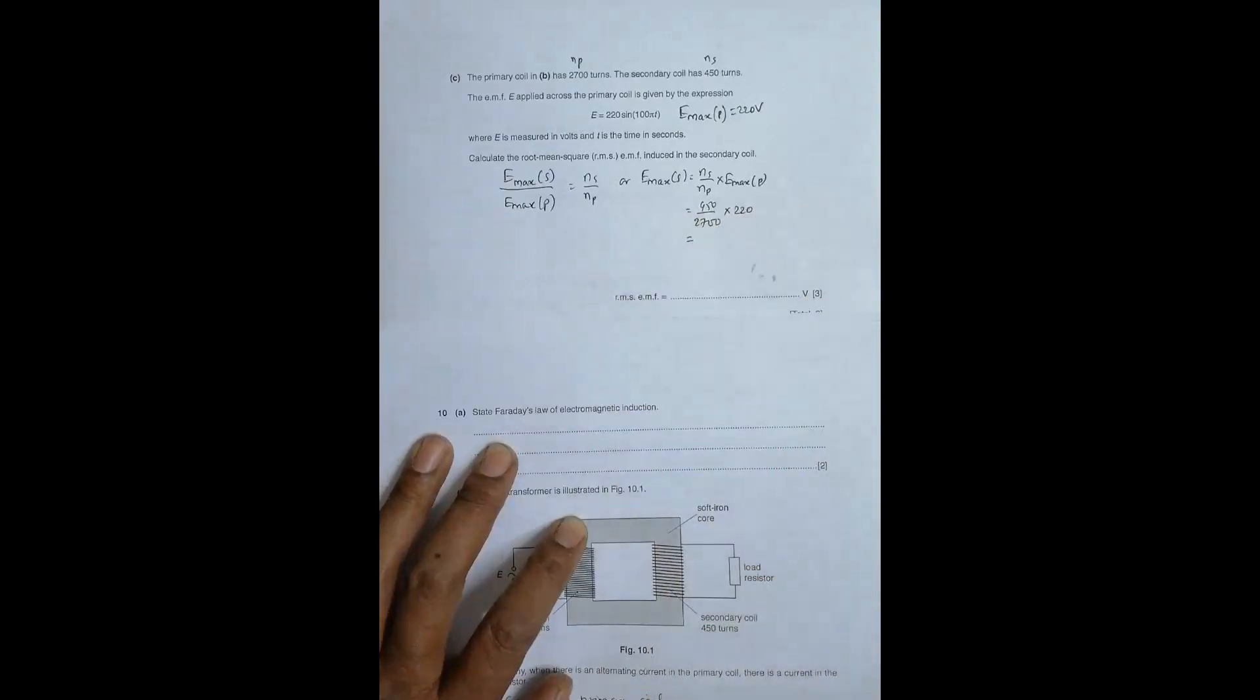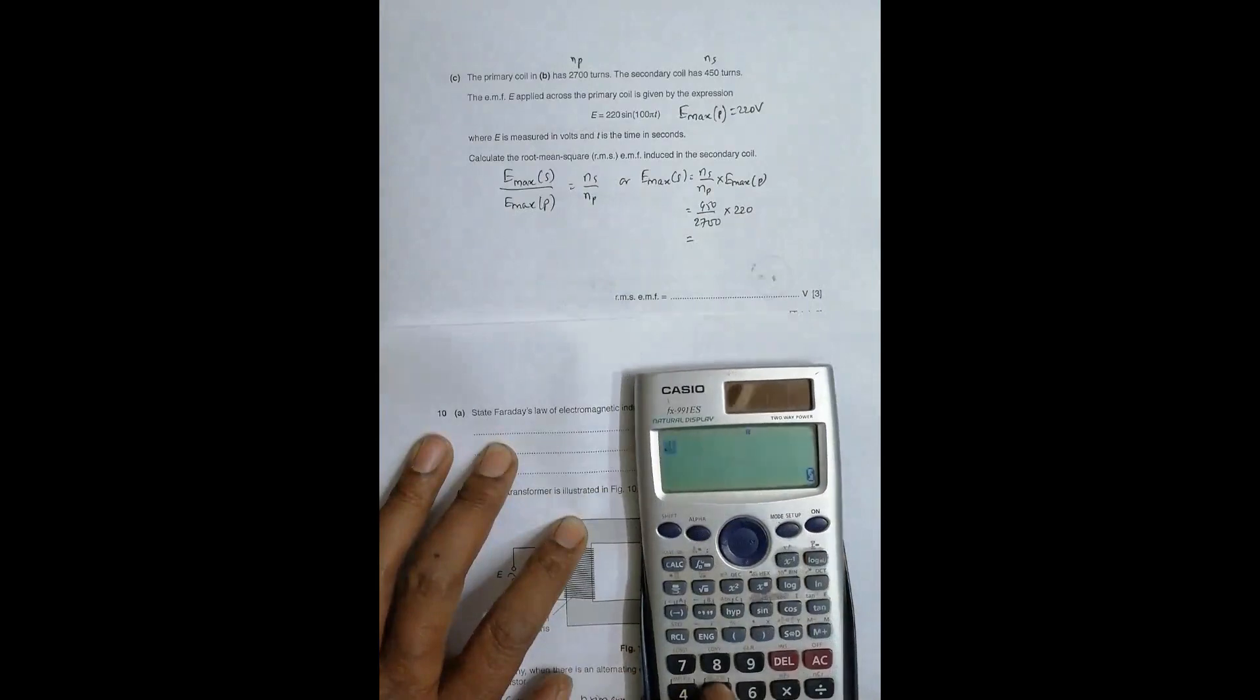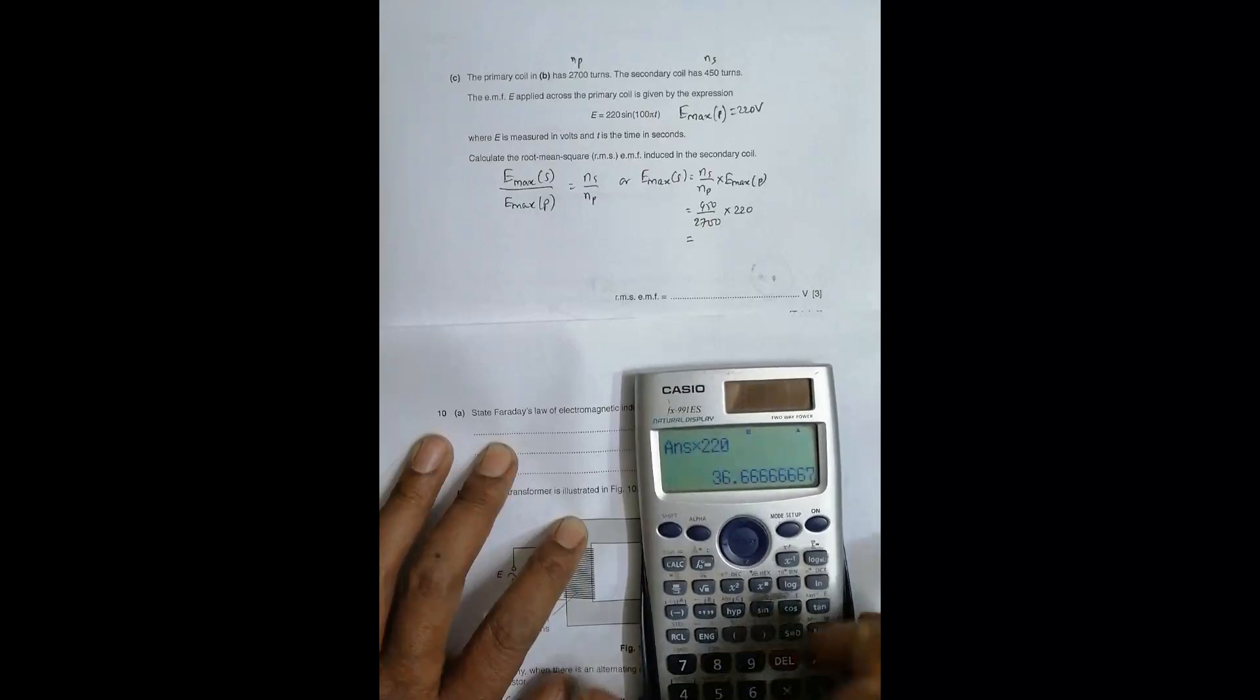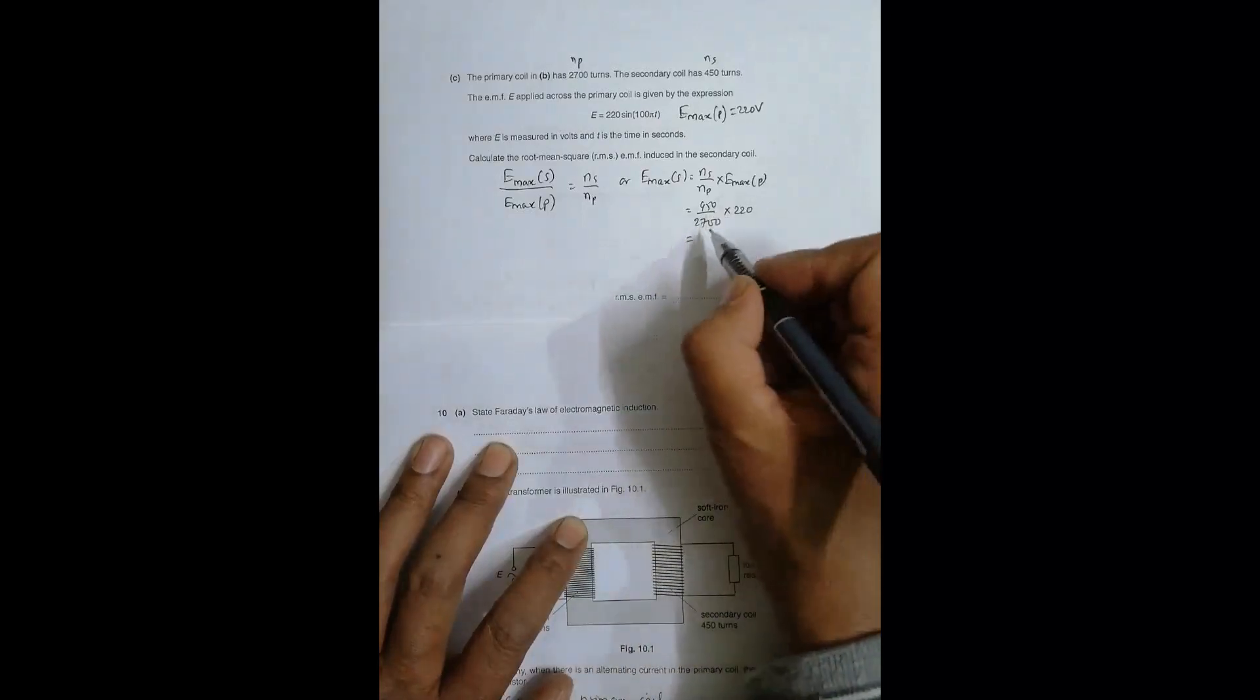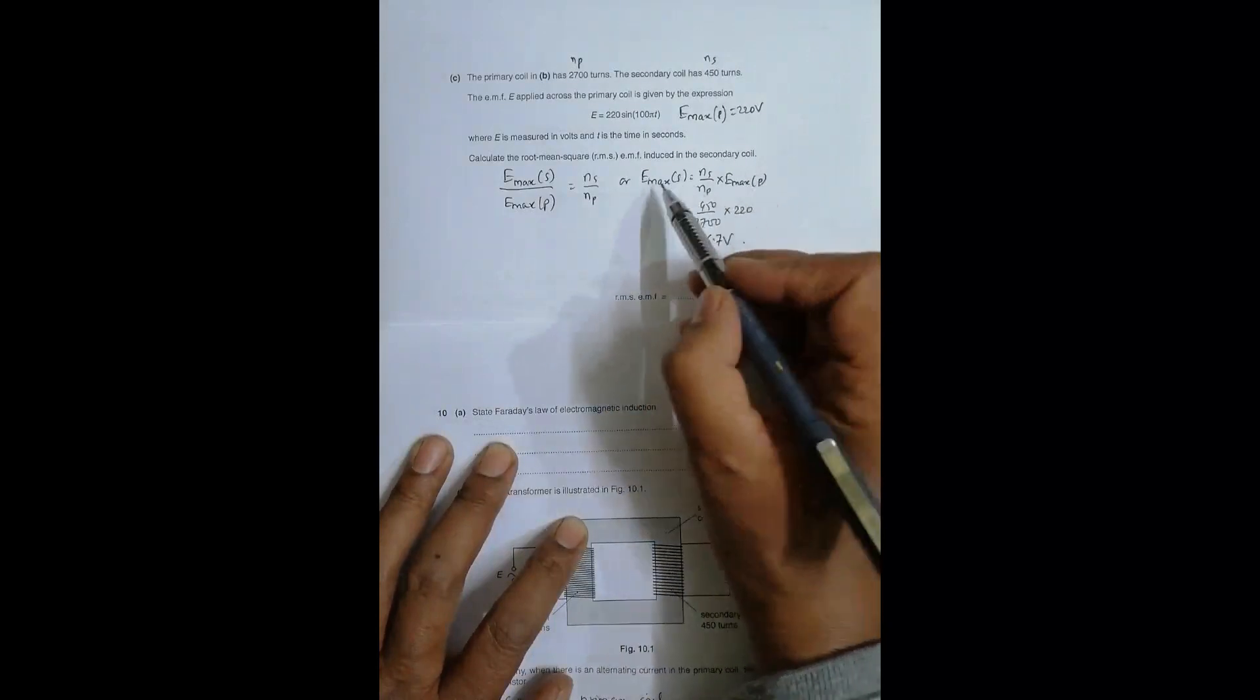Let me use a calculator. 450 divided by 2700 times 220 gives us 36.7 volts. So this is E_max secondary.